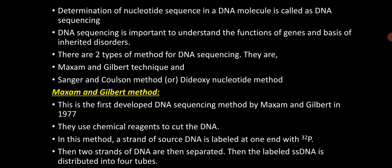The Maxam and Gilbert method is the first developed DNA sequencing method, developed by Maxam and Gilbert in the year 1977. They use chemical reagents to cut DNA in this method. A strand of source DNA, that is the sample DNA, should be labelled with a radioactive isotope at one end.